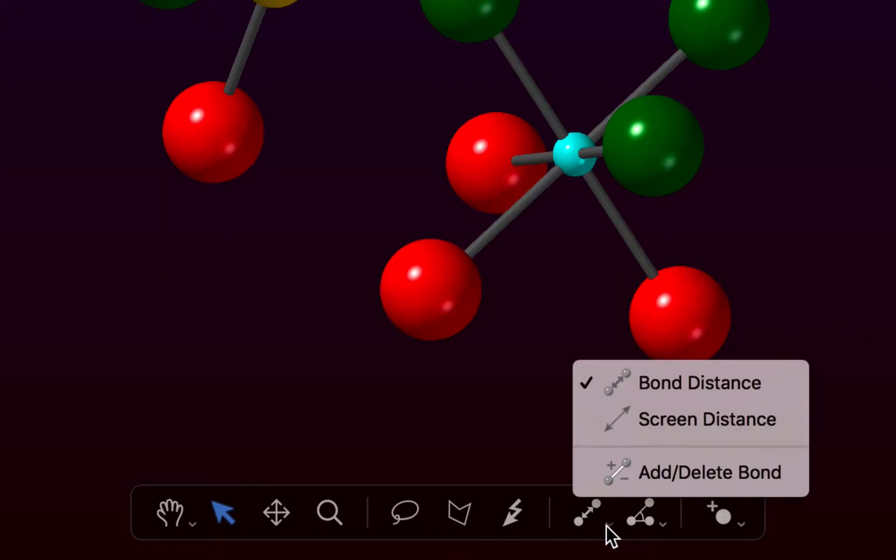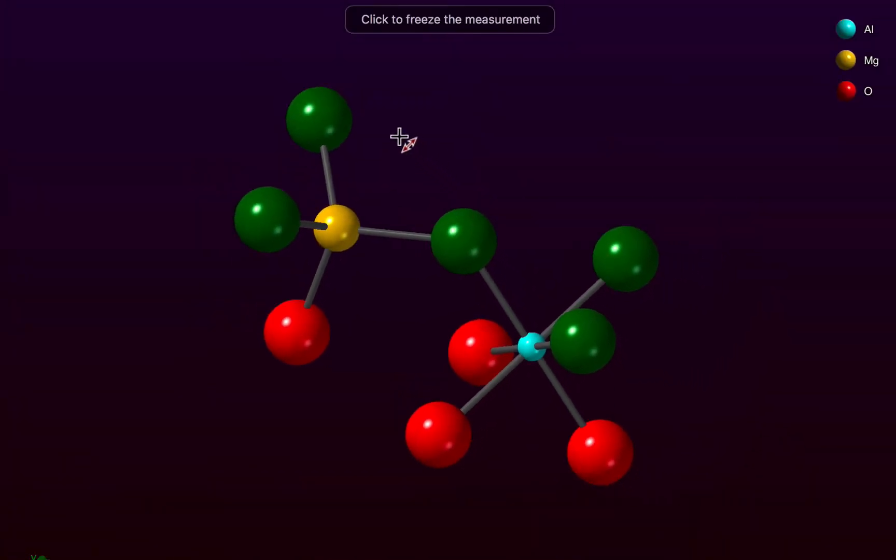you can see that there are additional tools available in this particular part of the tool strip. So let's choose the Screen Distance tool, and I can click and drag to measure distances in the plane of the plot.